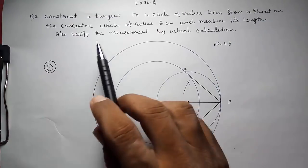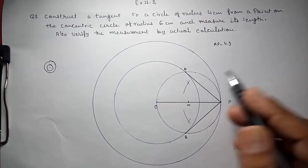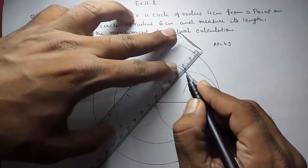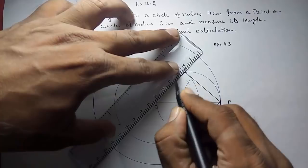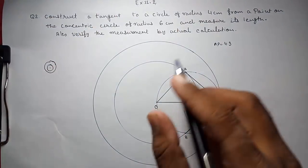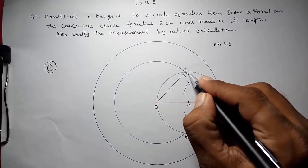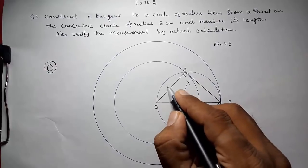Now we have to do actual calculation. So here we know it is forming a right angle triangle because in a semicircle you are always getting a right angle triangle.